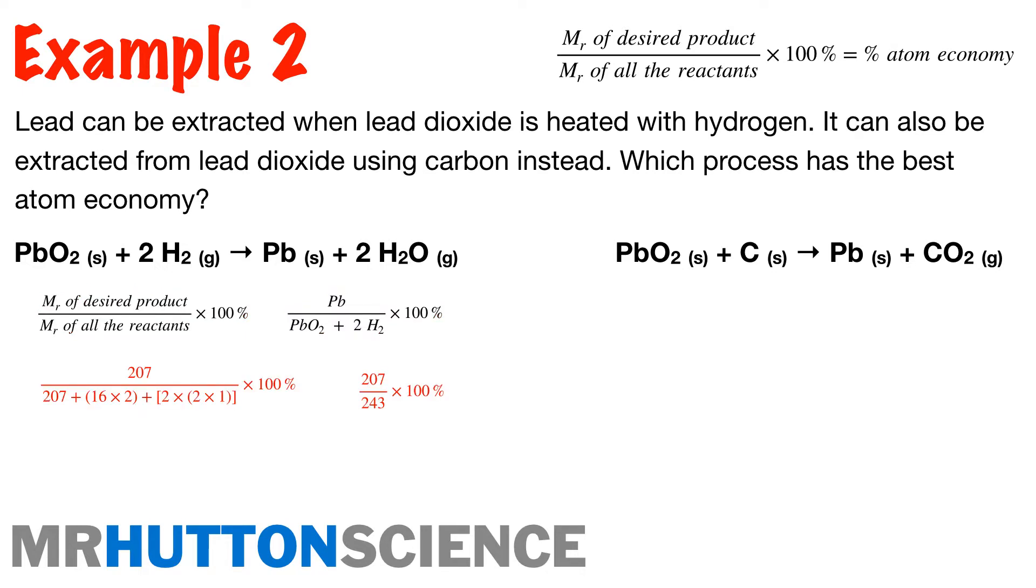So here we have lead divided by lead oxide plus two lots of H2. So if we put the numbers in, remember these numbers, your relative atomic mass is coming from the periodic table. It's the bigger number on each of those squares for our elements. So if you're unsure where those numbers are coming from, that's where they're coming from. So we end up with 207 divided by 243 times 100. So process one has an atom economy of 85.2%.